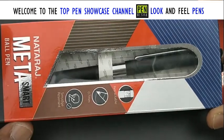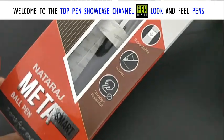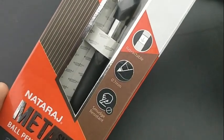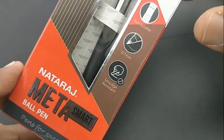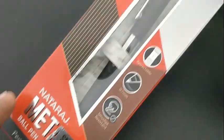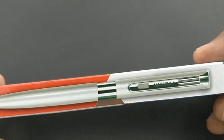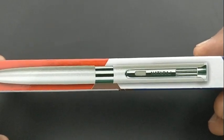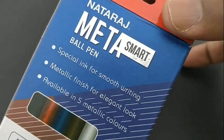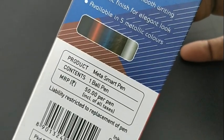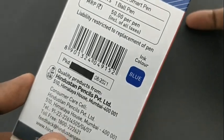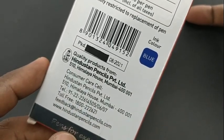Nataraj Meta Smart Ball Pen costs rupees 50. This pen comes with metallic finish body, 0.7 mm tip, and comes in 5 different body colors as the pack says. At this price point of rupees 50, this pen is refillable with Jotter Refills.